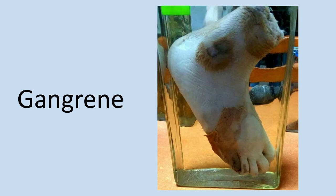Next is gangrenous necrosis. This is not a specific pattern of cell death similar to the last two, but instead a combination of those two types. We often see some type of injury to the lower limb — the legs lose their blood supply and start to undergo coagulative necrosis. On top of that, a bacterial infection is superimposed, driving liquefactive necrosis due to bacterial enzymes and attracted white blood cells. This combination of liquefactive necrosis on top of coagulative necrosis is referred to as gangrene.